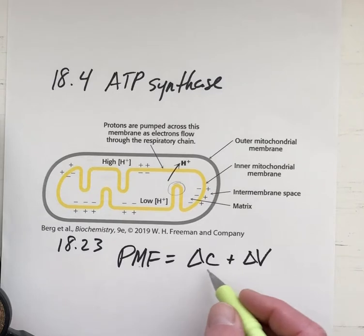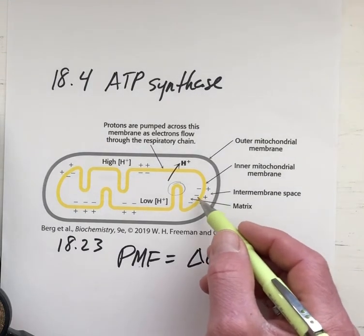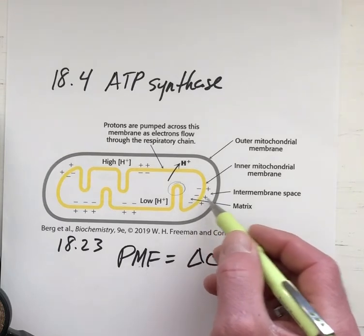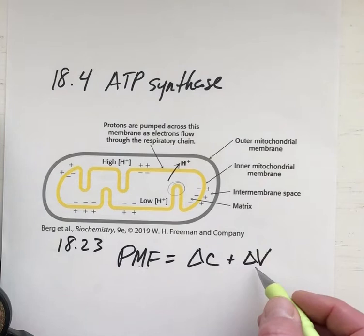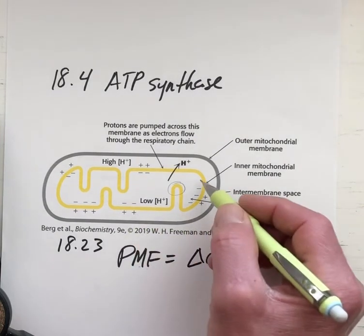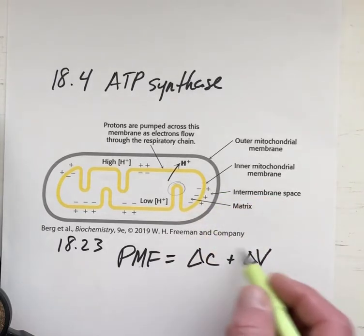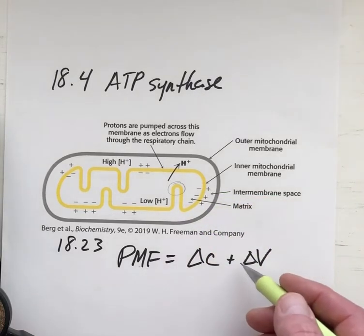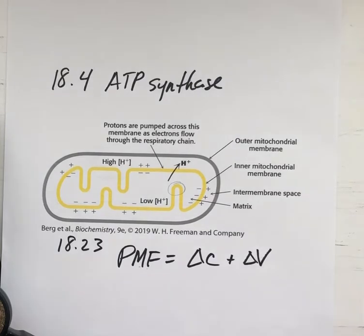That proton motive force is a consequence of two components: a chemical component, which describes the difference in concentration of the protons, and also a voltage component, because there's an excess of positive charge on the outside and negative charge on the inside. That makes these protons even more valuable in terms of energy for driving the synthesis of ATP.